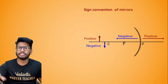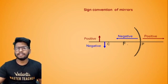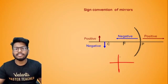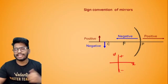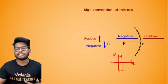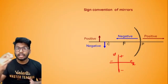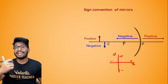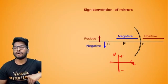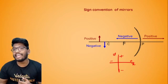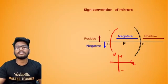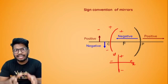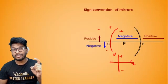In mirrors, the sign convention works like Cartesian coordinates. Anything above the y-axis is positive, below is negative, left is negative, right is positive. Similarly, anything in front of the mirror is negative, behind the mirror is positive, above the mirror is positive, and below the mirror is negative. This applies to both concave and convex mirrors — and importantly, it is the exact same thing for lenses as well.